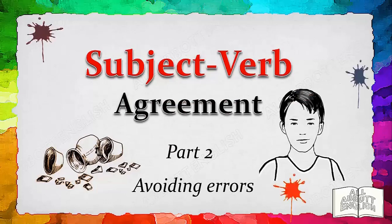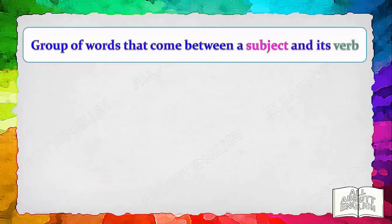Subject-Verb Agreement Part 2: Avoiding Errors. Sometimes, the subject and its verb are separated by many words. When this happens, we need to check back to see what the subject is, and then we make the verb agree with it. Let's look at some examples of a complex sentence with a group of words that come between a subject and its verb.